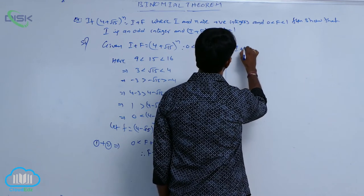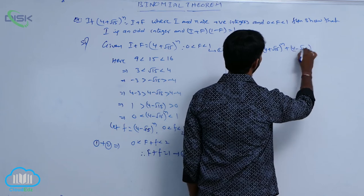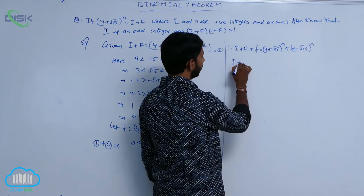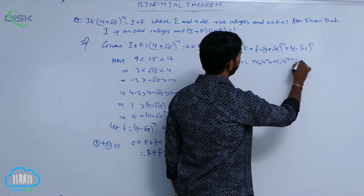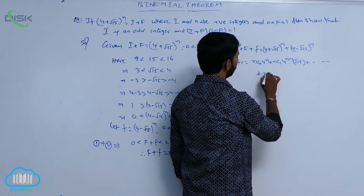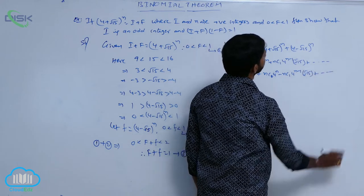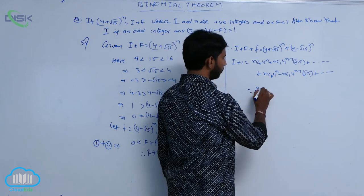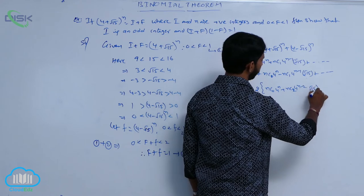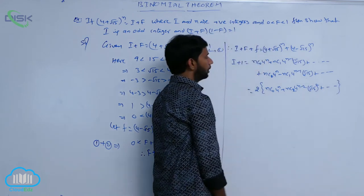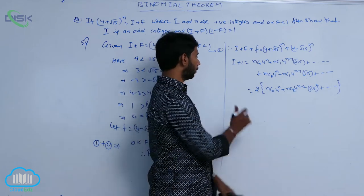Therefore, i + f + f' = (4 + √15)^n + (4 - √15)^n. Since F + f' = 1, this becomes i + 1. Expanding: = [nC0·4^n + nC1·4^(n-1)·√15 + ...] + [nC0·4^n - nC1·4^(n-1)·√15 + ...] = 2 times [nC0·4^n + nC2·4^(n-1)·(√15)^2 + ...]. This is a multiple of 2, i.e., an even integer.